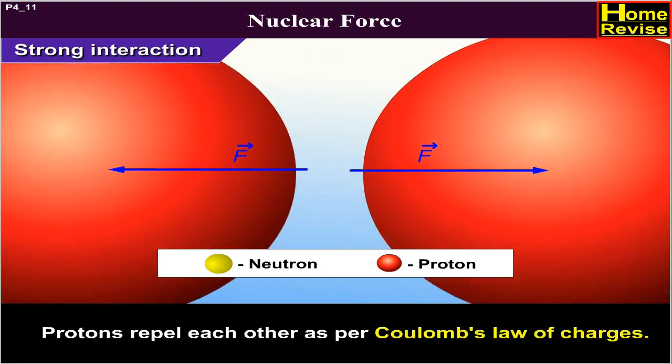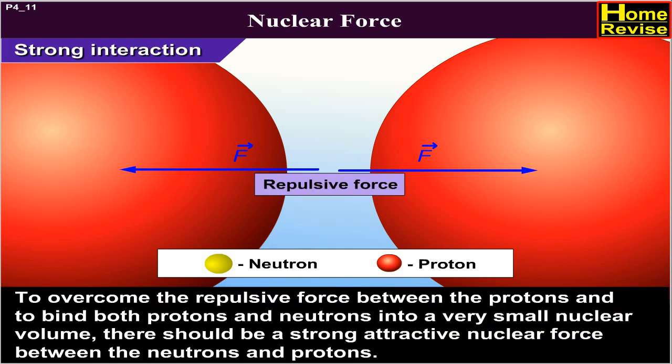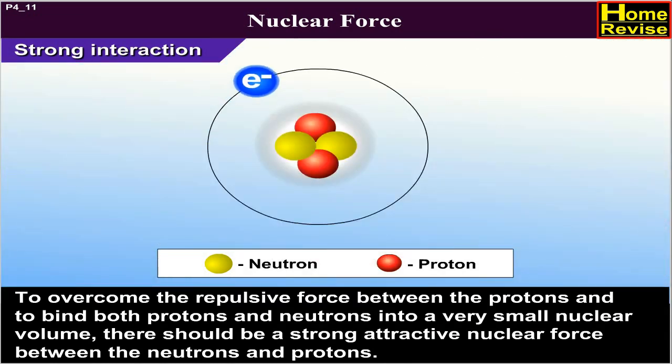Protons repel each other as per Coulomb's law of charges. To overcome the repulsive force between the protons and to bind both the protons and neutrons into a very small nuclear volume, there should be a strong attractive force between the neutrons and protons.